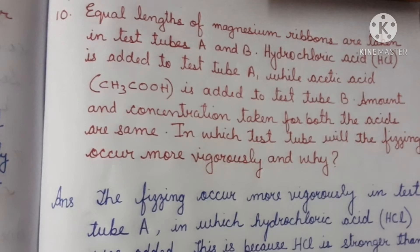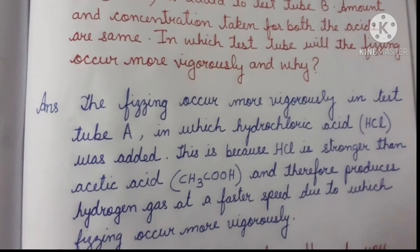Question 10: Equal lengths of magnesium ribbons are taken in test tubes A and B. Hydrochloric acid is added to test tube A while acetic acid is added to test tube B, with the same amount and concentration. The fizzing occurs more vigorously in test tube A because hydrochloric acid is stronger than acetic acid and produces hydrogen gas at a faster rate.